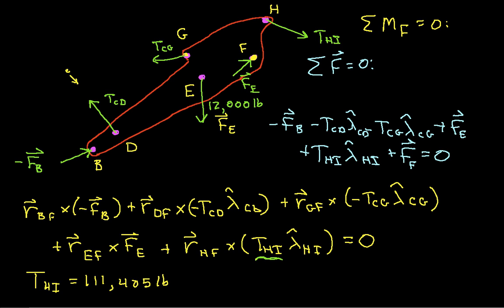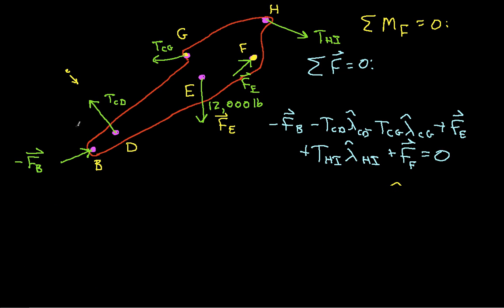And when we solve this, again, I will not go through any of the details, but we get that F sub F is minus 94,117 pounds I hat plus 101,607 pounds J hat. So basically, we now have the unknown reaction force at F and we've got the unknown tension at H.